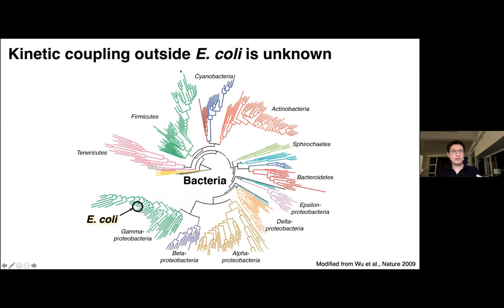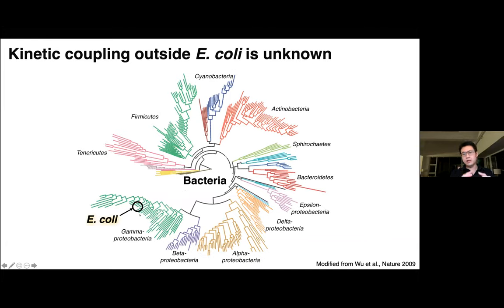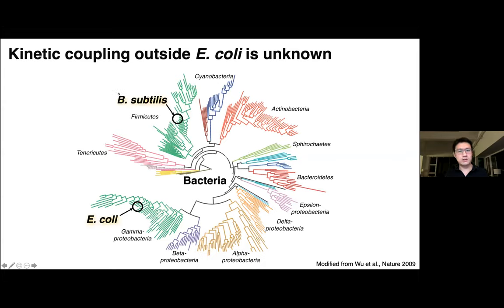Transcription-translation coupling is considered a cornerstone of gene regulatory processes in bacteria and deeply influences how we think about their genomes. But most of the evidence for coupling comes from E. coli, which represents only a small island in the large bacterial world. Whether kinetic coupling occurs in most species is actually unknown — even for another well-studied model organism, Bacillus subtilis.